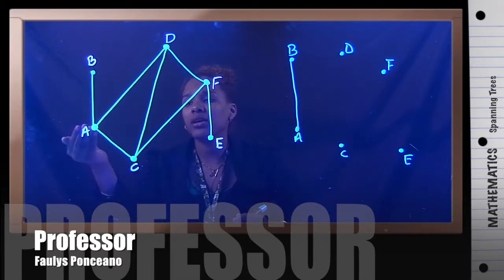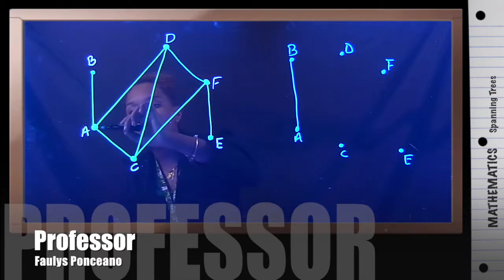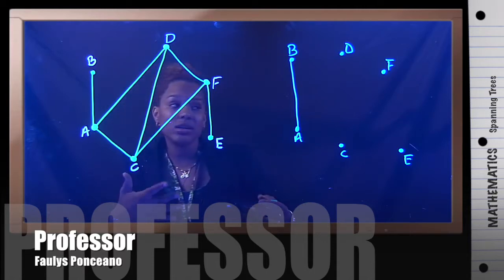Because B to A is already a bridge. It has no circuits. There's only one way for me to get from B to A or A to B, which is this edge right here. So it's already a bridge.